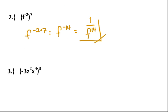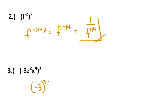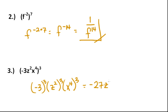Number three is a little more complicated, but you do it the same way. We would have minus three to the third, times z squared to the third, times x to the fourth to the third. When you simplify this out, you get minus twenty-seven, z to the two times three, times x to the four times three. This gives us, finally, minus twenty-seven z to the sixth x to the twelfth as the answer.